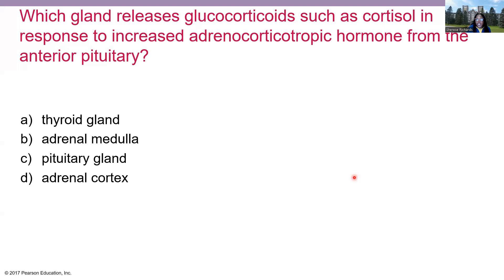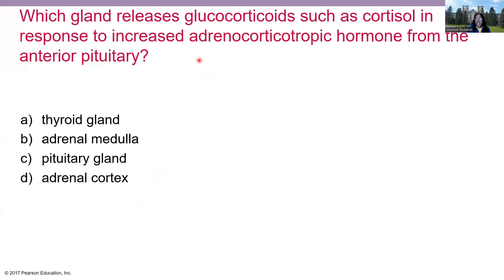A poll question asks which gland releases glucocorticoids such as cortisol in response to increased adrenocorticotropic hormone (ACTH) from the anterior pituitary. The answer is the adrenal cortex — this is the glucocorticoid-cortisol axis. The thyroid gland is involved in the TRH-TSH-T3/T4 axis. The adrenal medulla is part of the sympathetic division of the autonomic nervous system, not the endocrine axis. The pituitary secretes trophic hormones like TSH and ACTH, and the adrenal cortex secretes cortisol and androgens.